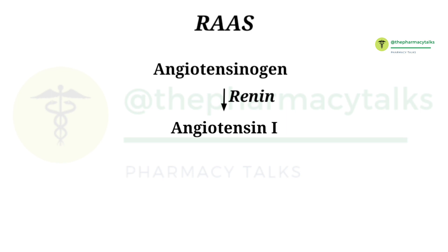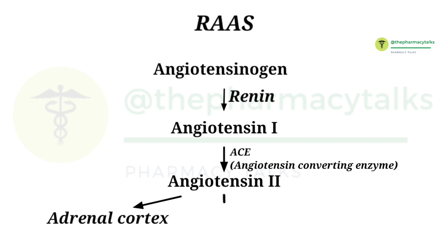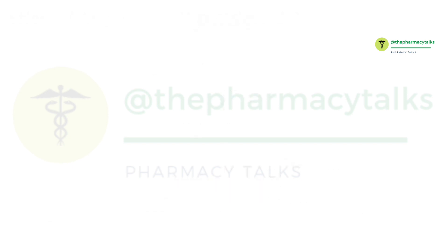Angiotensin-1 is then converted into angiotensin-2 by the enzyme angiotensin-converting enzyme, or ACE. This enzyme is expressed in various tissues and is especially abundant in the lungs. The angiotensin-2 produced exerts its effects on the adrenal cortex, adrenal medulla, and arterial walls.